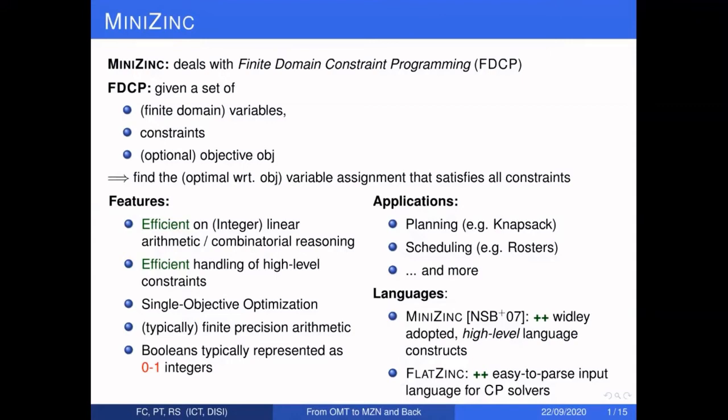Constraint solvers are very efficient at linear arithmetic and can handle high-level constraints, but they map real variables into finite precision arithmetic and represent arithmetic and boolean using zero-one integers. Applications include planning and scheduling problems. Then we have OMT — Optimization Modulo Theories — an extension of Satisfiability Modulo Theories where we find a model satisfying a first-order logic formula with respect to one or more theories while minimizing one or more objectives.